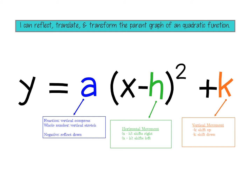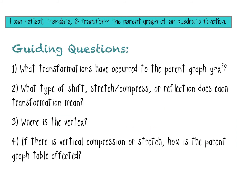This vertex form is really important — you need to know what each variable does and how it affects the graph. As I go through the graphing process, I ask myself: What transformations have occurred? Is there an A, H, or K? What type of shift, stretch, compression, or reflection does each mean? Then: Where is the vertex? Put it on the graph. And if there is vertical compression or stretch, how is the parent table affected?